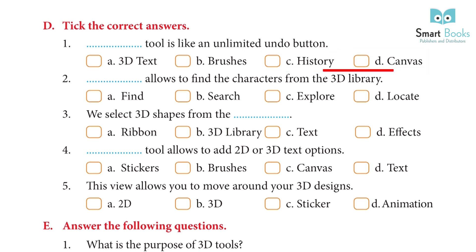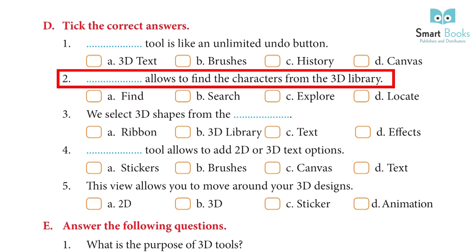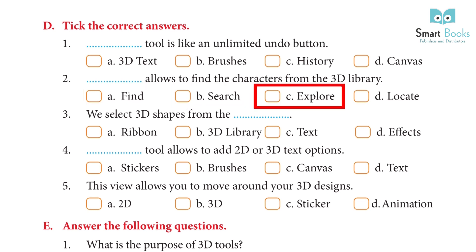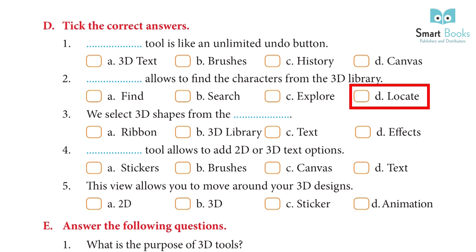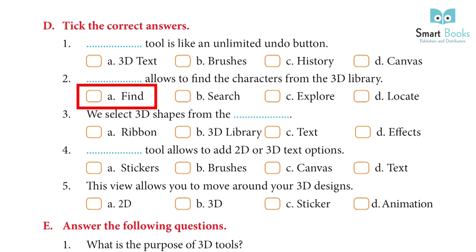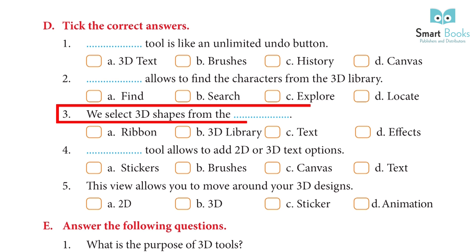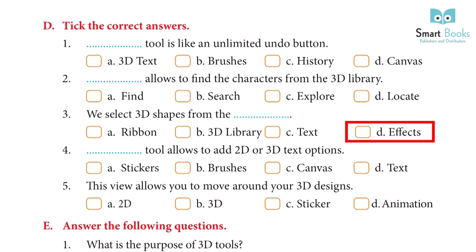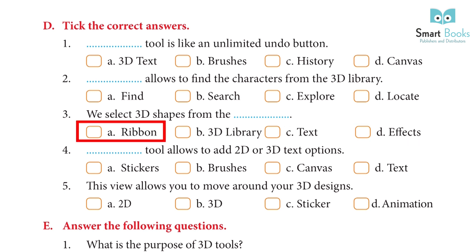2. Dash allows you to find a character from the 3D Library. A. Find, B. Search, C. Explore, D. Locate. Answer: A. Find. 3. Select 3D shapes from the Dash. A. Ribbon, B. 3D Library, C. Text, D. Effects. Answer: A. Ribbon.